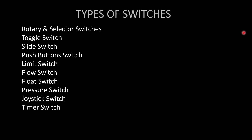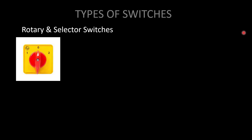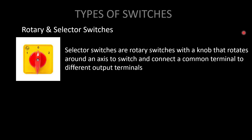Apart from the above switches, there are many varieties available in the market: rotary and selector switches, toggle switch, slide switch, push button switch, limit switch, flow switch, float switch, pressure switch, joystick switch, timer switch, and more. Rotary and selector switches have a knob that rotates around an axis to connect a common terminal to different output terminals. We can see these on almost all industrial equipment.